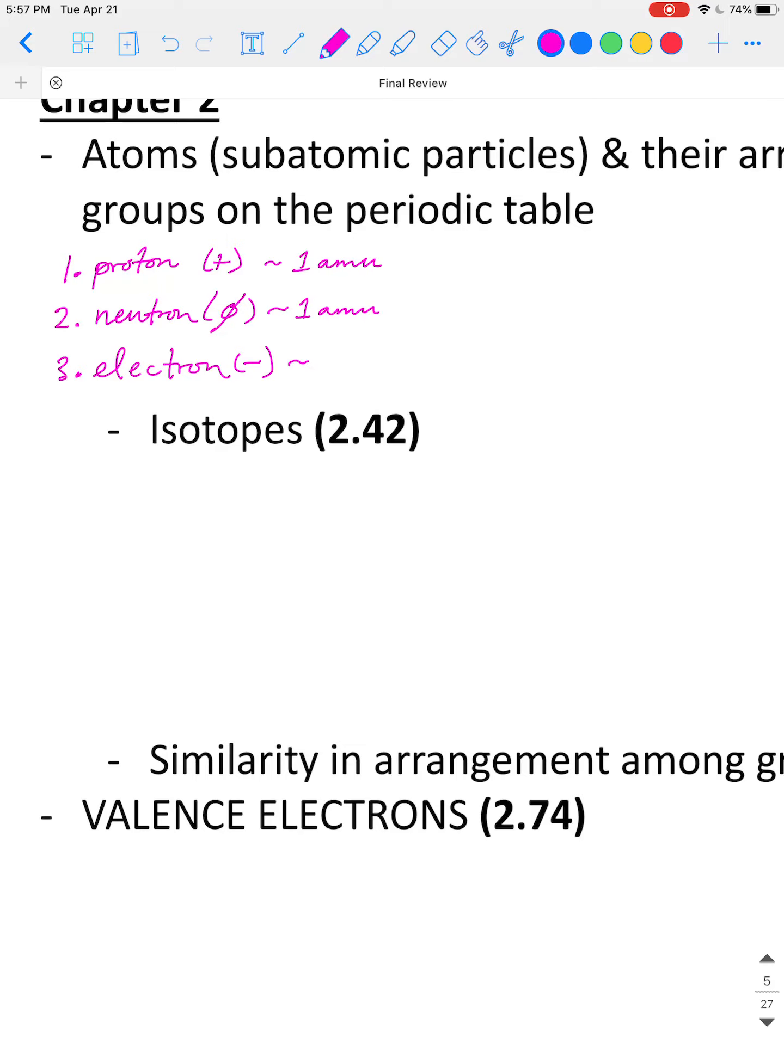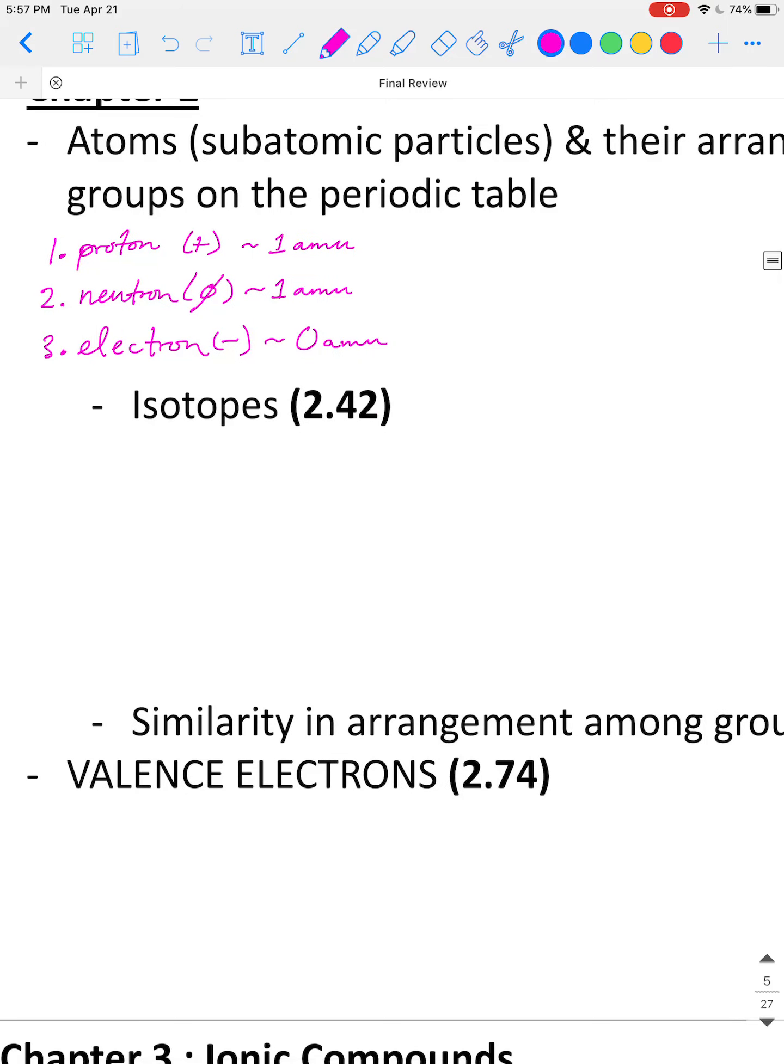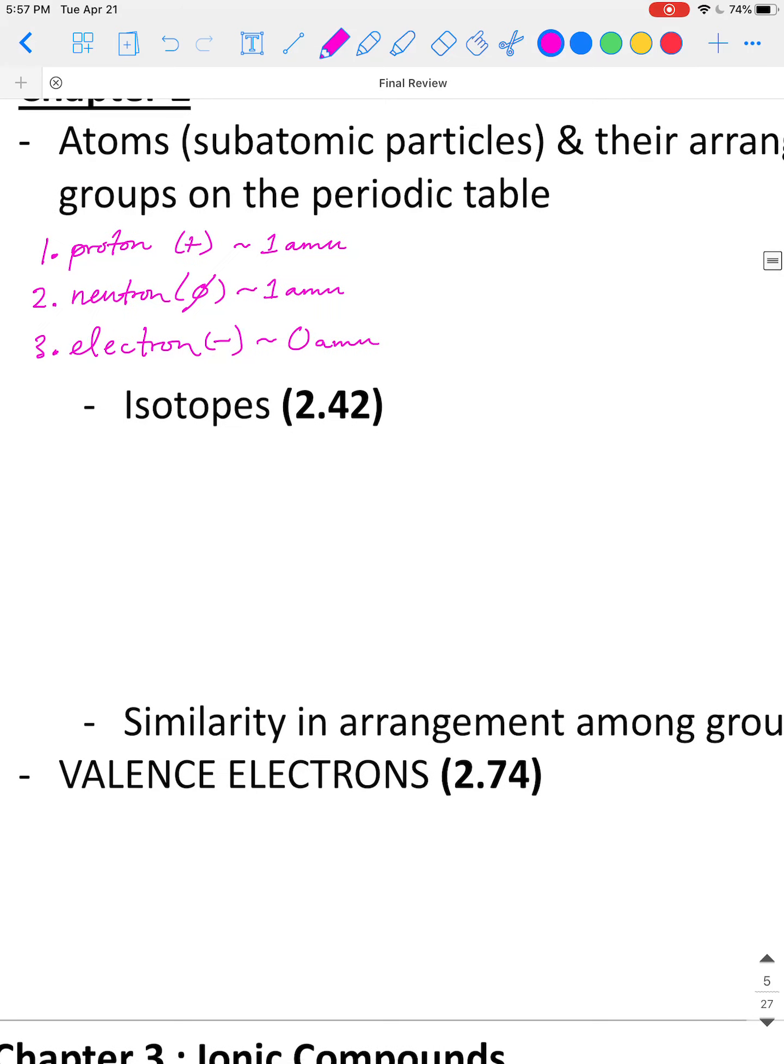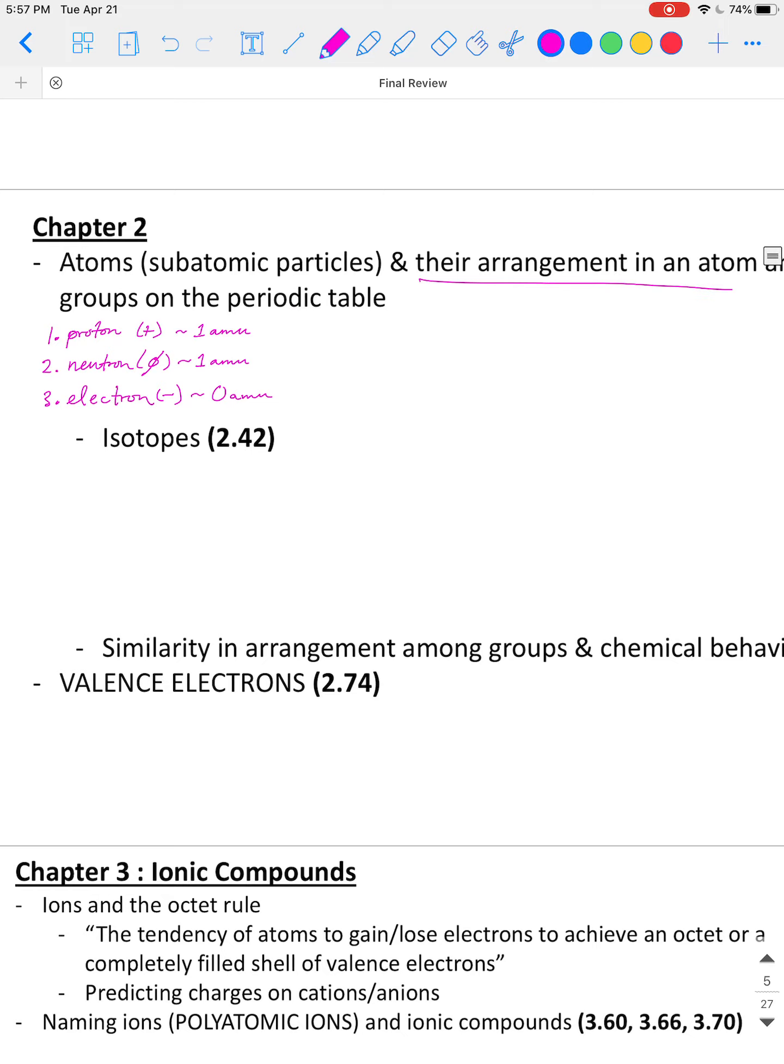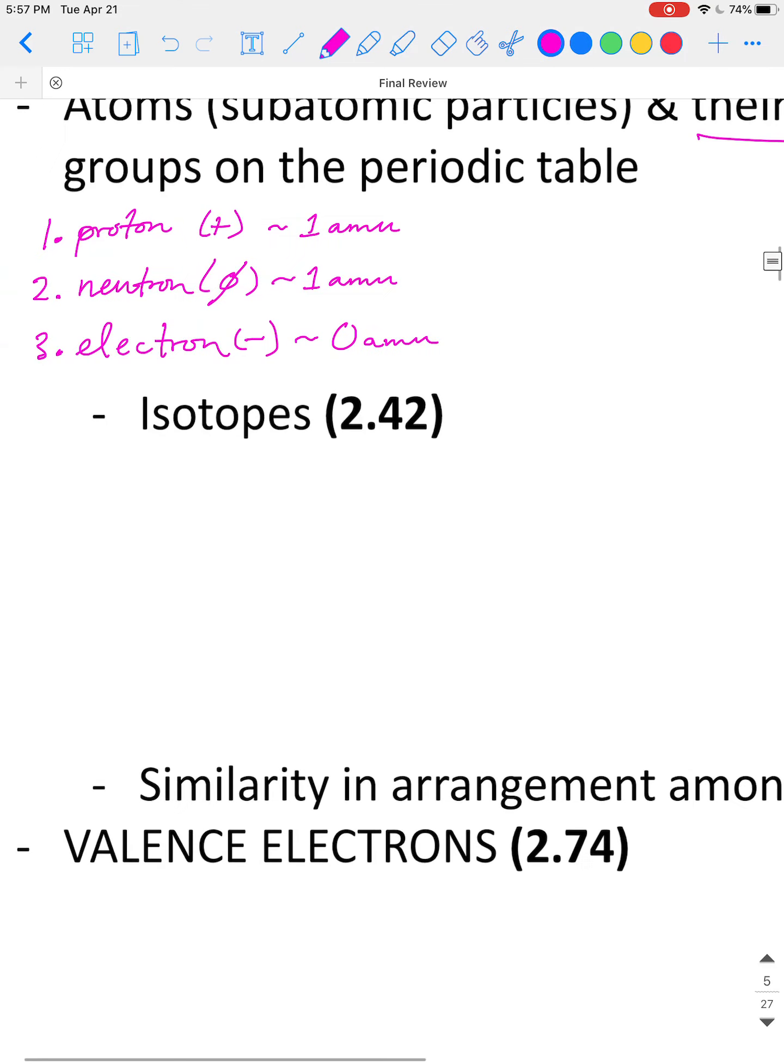Number three, we have an electron. It carries negative charge, and we say it weighs 0 amus, weighs nothing, comparatively, compared to the other subatomic particles.